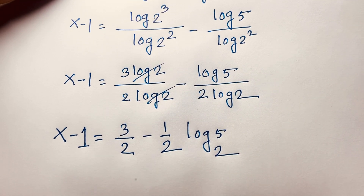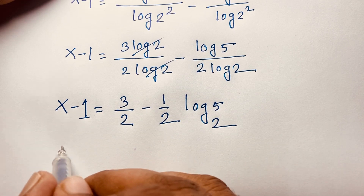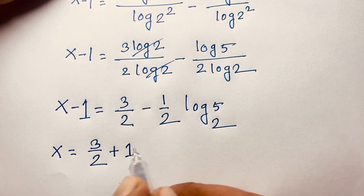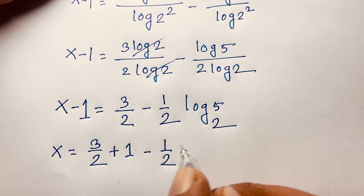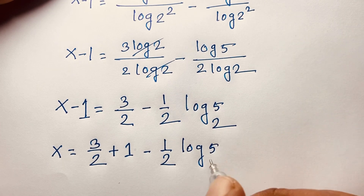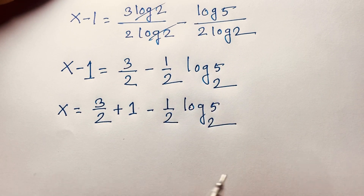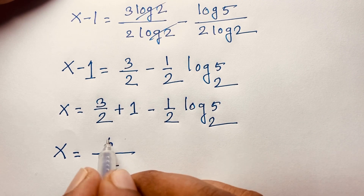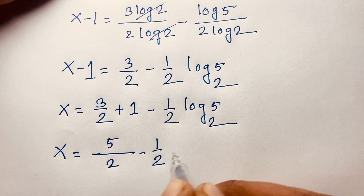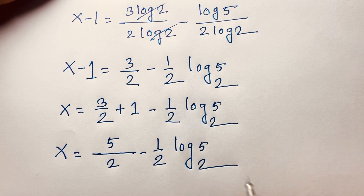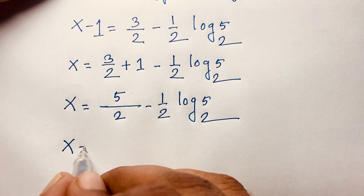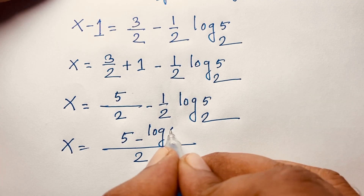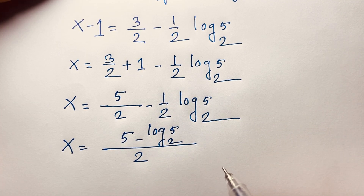So x minus 1 equals 3 over 2 minus 1 over 2 times log 5 base 2. Moving the negative 1 to the other side, x equals 1 plus 3 over 2, minus 1 over 2 log 5 base 2. With the least common denominator of 2, this becomes x equals 5 over 2, minus log 5 base 2, all over 2. This is our final answer.